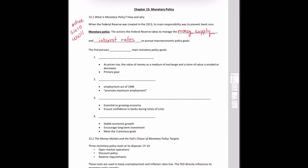So what are these goals? The four main goals of the Fed are price stability, high employment, stability of financial markets and institutions, and economic growth. We're going to talk about each of these in turn.